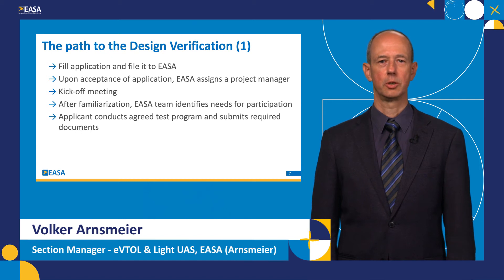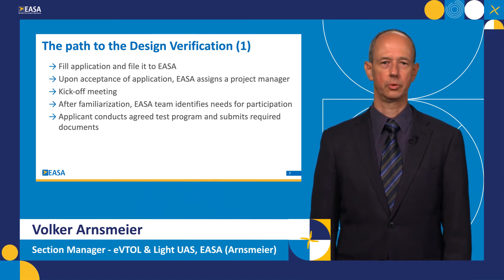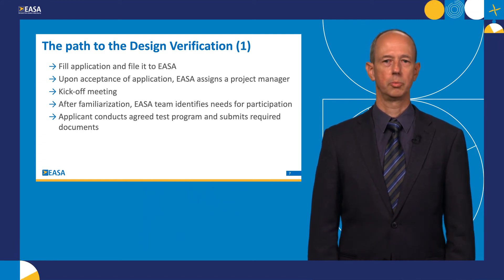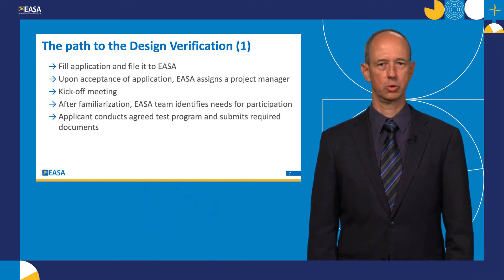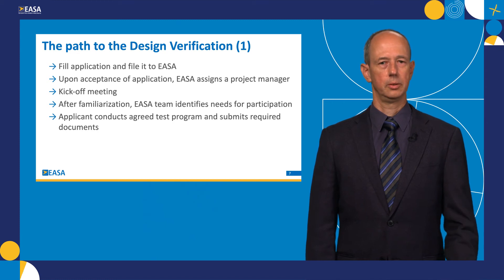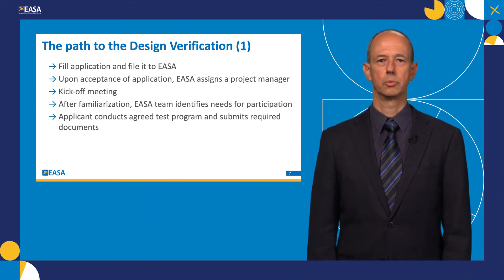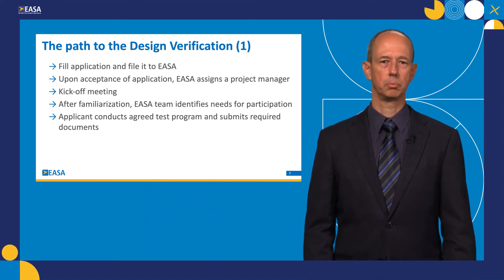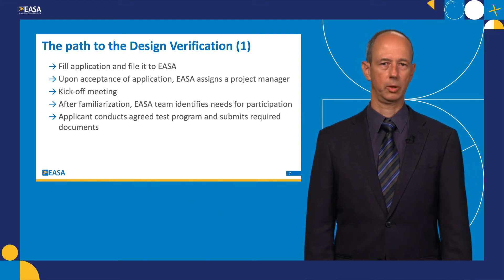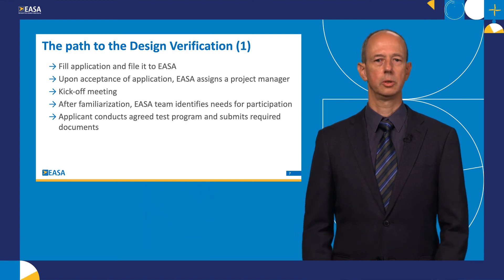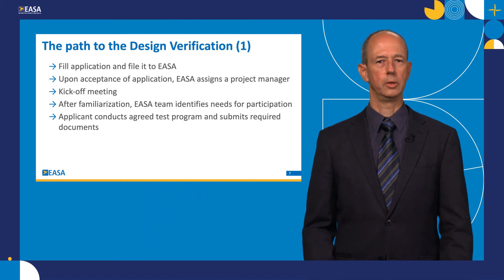Hello, my name is Volker Ansmeyer. I'm section manager of the eVTOL and Light UAS section. We are in charge of performing the design verification activities. You've already heard from Antonio about the assessments to be performed before filing the application to us. Now it's time to actually file the application. Please use the format that you can find on our website, and use the filling instructions which are linked on the last page. With this initial information, we will perform an initial review to see whether your application and the proposed design is in principle acceptable. If there are features which might be life-threatening, we may raise questions before accepting it. We will then accept your application and assign internally an EASA project manager, who will also involve relevant experts for the domains to be investigated.